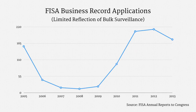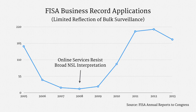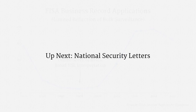In closing, let me give a little data on FISA business record applications. The data doesn't much reflect bulk surveillance programs, but it does shed some light on individual orders. The trend in this graph that I'd like to emphasize is that, in roughly 2008, online services began to resist a broad interpretation of the government's national security letter authority. Specifically, online services stopped giving out electronic messaging metadata in response to NSLs, so the government began using business record orders where it would have previously used NSLs. Accessing message metadata now appears to be the most common use for individual business record orders. The next lecture covers national security letters — they aren't part of FISA itself, but they're very closely related and they pose many similar challenges.